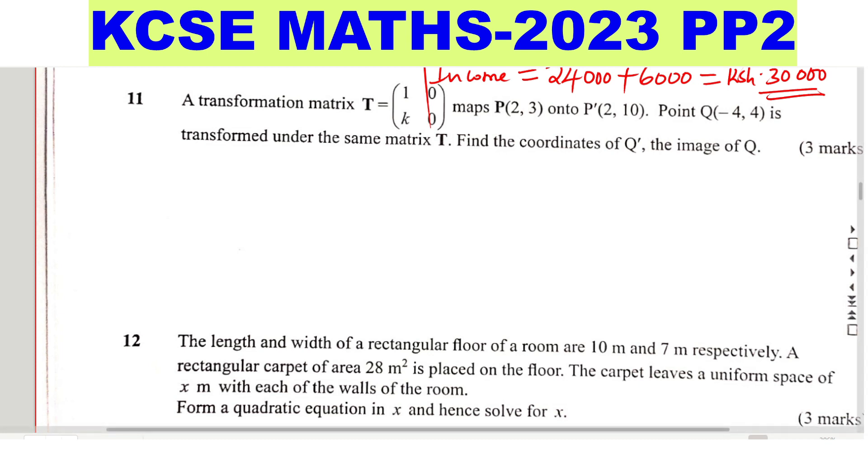So we have the matrix T. It maps P onto P'. When you're transforming using a matrix, we should always pre-multiply. The matrix of transformation should always come first. So if you're transforming P, this is how we're supposed to do it.